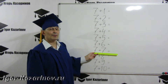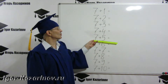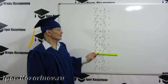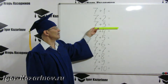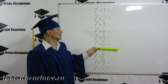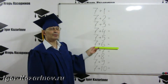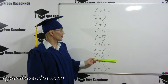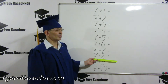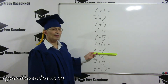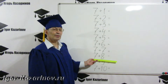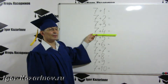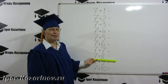7 plus 7, 14. 7 plus 5, 12. 7 plus 7, 14. 7 plus 3, 10. 7 plus 6, 13. 7 plus 7, 14. 7 plus 8, 15. 7 plus 7, 14. 7 plus 8, 15. 7 plus 4, 11. 7 plus 8, 15.